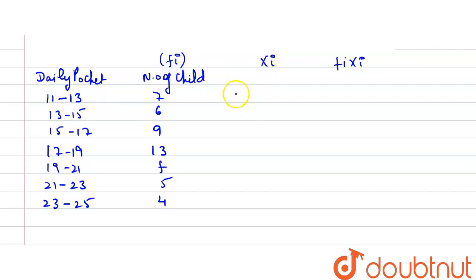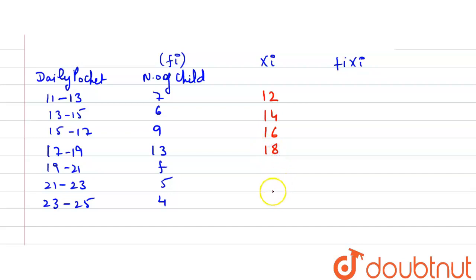Now let's find xi for each interval. 11 plus 13 is 24, divided by 2 gives xi = 12. Then 13 plus 15 is 28, divided by 2 gives xi = 14. Then 15 plus 17 is 32, divided by 2 gives xi = 16. Then 17 plus 19 is 36, divided by 2 gives xi = 18. Then 19 plus 21 gives xi = 20. For 21 plus 23 = 44, divided by 2 gives xi = 22.